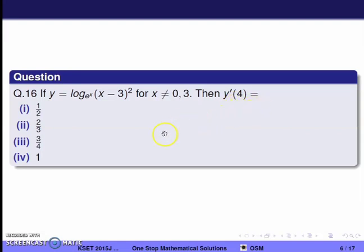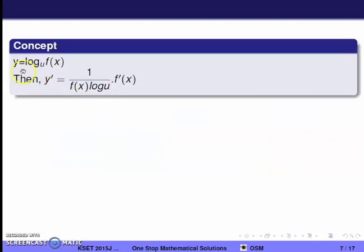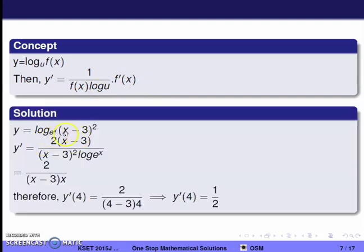Using the concept: if y = log_e[f(x)], then y' = f'(x)/f(x). Here f(x) = x·(x−3)^2, so f'(x) = (x−3)^2 + x·2(x−3) = (x−3)[(x−3) + 2x]. Simplifying y' = 2/(x−3) multiplied appropriately gives y' = 2·(x−3)·x / [x·(x−3)^2].